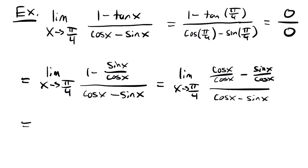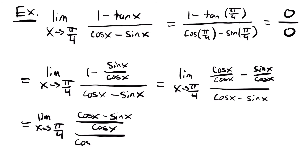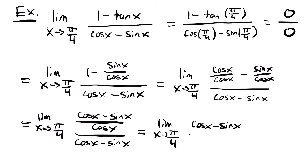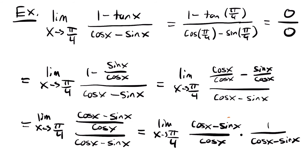Let's rewrite that. We'll have the limit as x approaches pi over 4 of cosine x minus sine x over cosine x, all over that cosine x minus sine x. All we did was combine those two fractions. Since we have a similar term on top and on bottom, we're going to cancel it. I'm going to rewrite this as the limit as x approaches pi over 4 of cosine x minus sine x over cosine x, multiplied by the reciprocal of our denominator, which is 1 over cosine x minus sine x. Then these two terms cancel, and we're just left with 1 over cosine x.